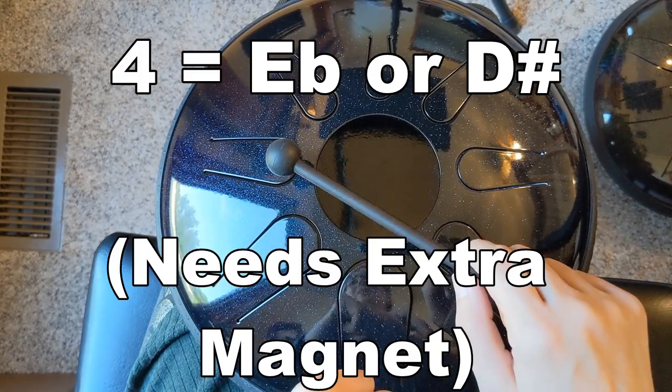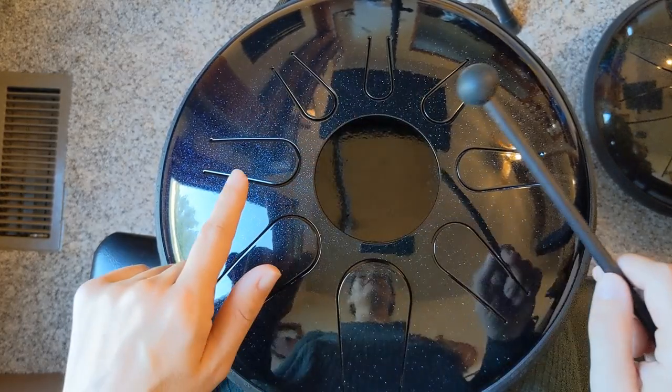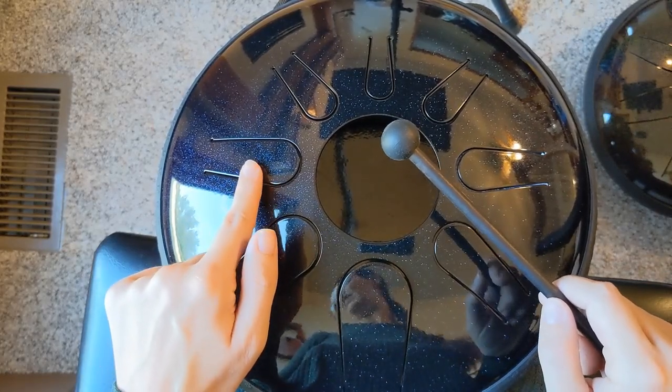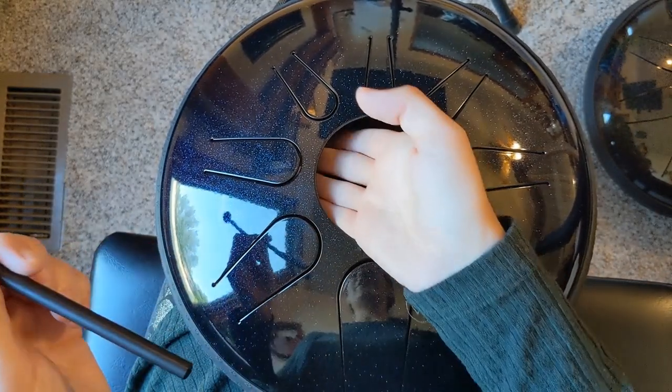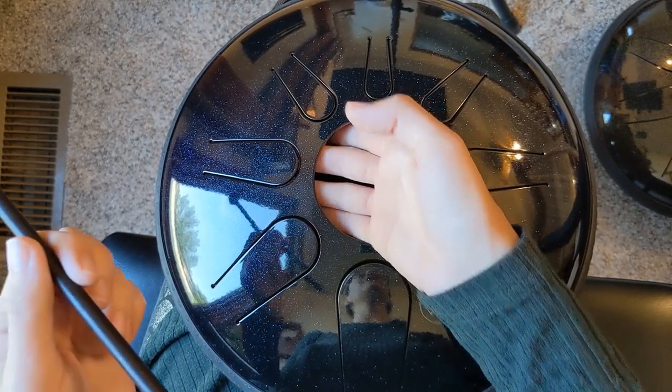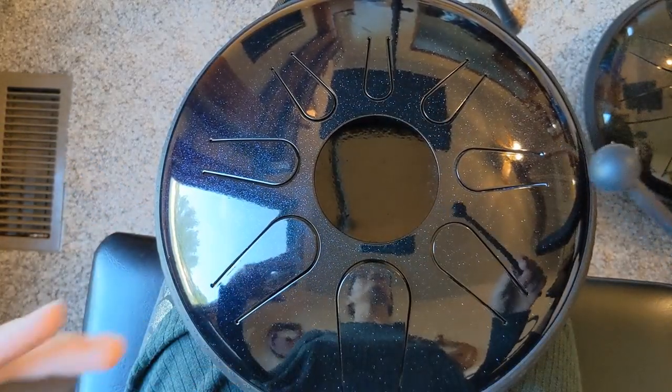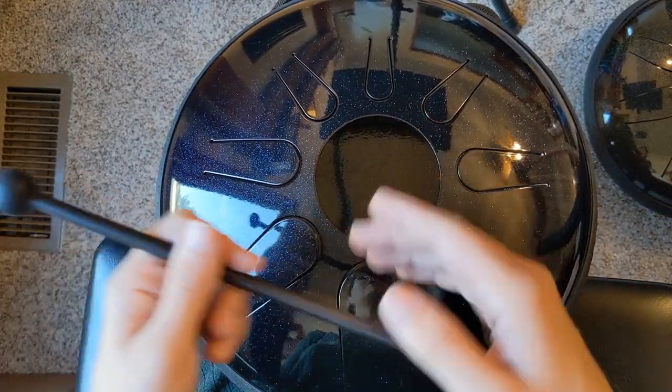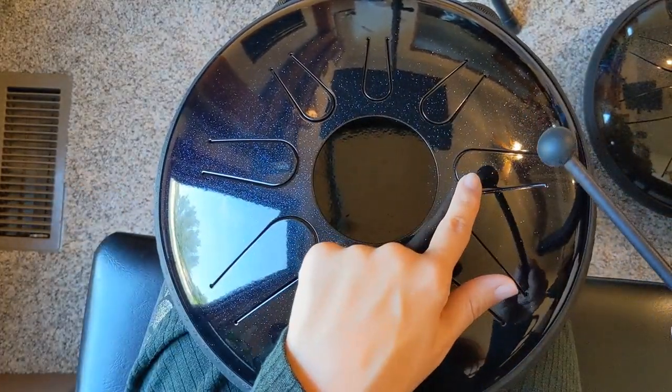Tongue number four is going to be an E flat. And this one, you're going to need your extra magnets on to get that down to an E flat. So the way the extra magnets work is you are going to add them on top of the magnet that's already under there. And that's going to make the note even lower than it was previously able to go by being at the very edge of the tongue.